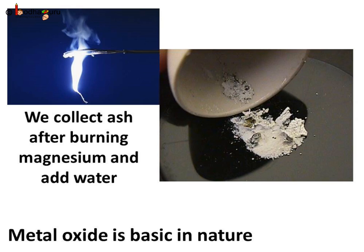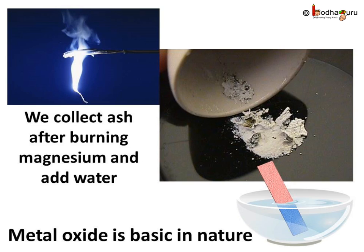Let us test one more metallic oxide. We burned a magnesium wire in air and collected its ash. This ash contains magnesium oxide. Now let us add water to it. If we dip a red litmus in the solution, it will turn blue too. So magnesium oxide is basic in nature too. Thus, we can say in general all metallic oxides are basic in nature.